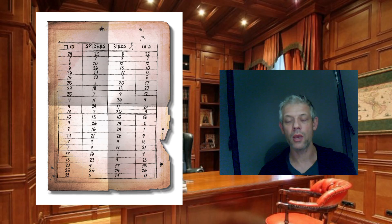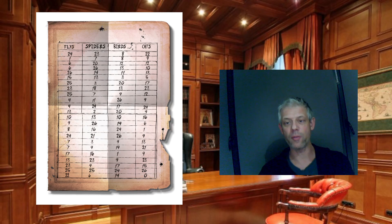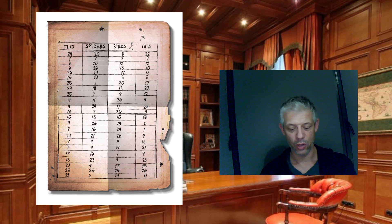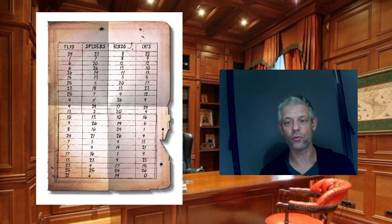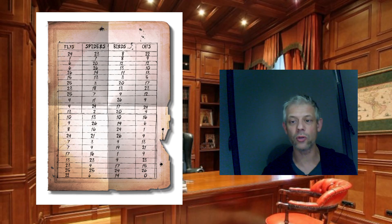Ce qui se passe c'est que c'est bien un code Vigenère. Mais normalement le code Vigenère utilise des lettres codées de 0 à 25, alors que là les lettres sont codées de 1 à 26. Il faut donc appliquer l'algorithme du code Vigenère avec la clé, qui est en fait la phrase que répètent plusieurs fois Renfield et qui est indiquée dans une des notes.